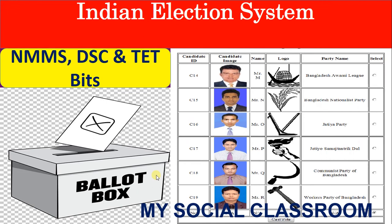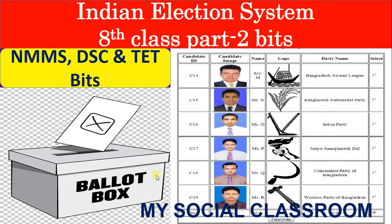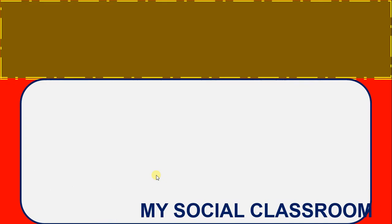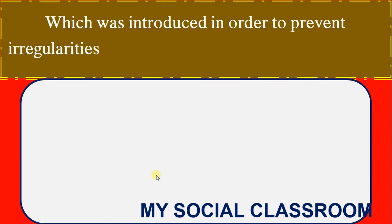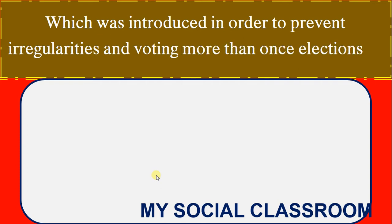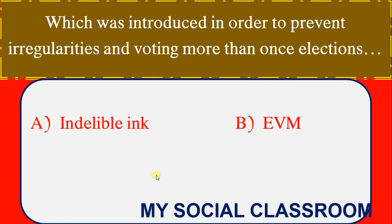Indian Election System, 8th Class Part 2 Bits. Which was introduced in order to prevent irregularities and voting more than once in elections? Options: Indelible Ink, EVM, VVPAT, None. Correct Answer: Indelible Ink.